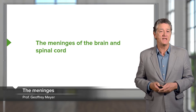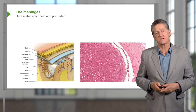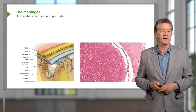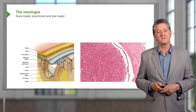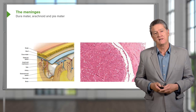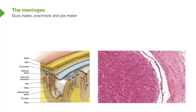Let's now move on and look at the meninges of the brain and also the spinal cord. Here is a section on the left-hand side showing a section through the skull — skin on the surface, the bone of the skull, and then underlying connective tissue. The periosteum is the capsule that lines the surface of bones, and that's continuous with the outer meningeal layer of the brain — the dura. The dura mater is really almost part of the periosteum — it's the outside covering of the brain.